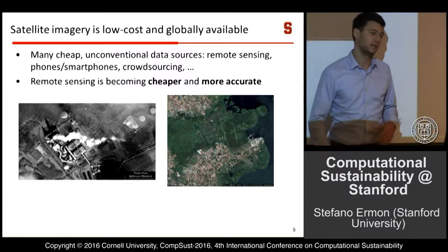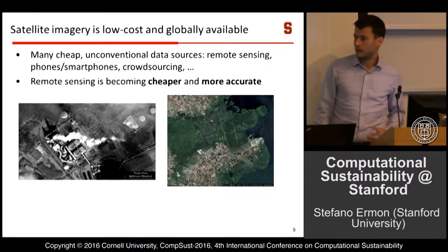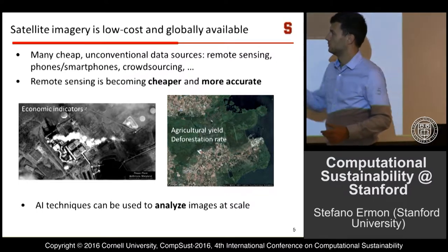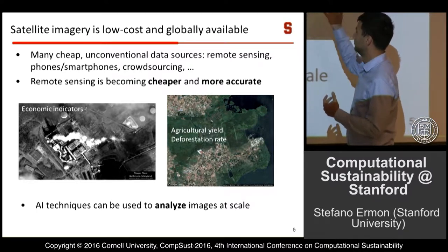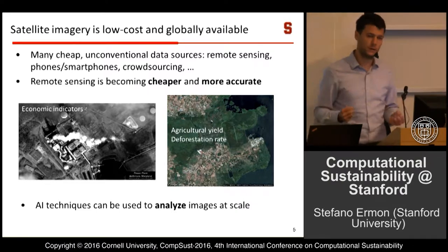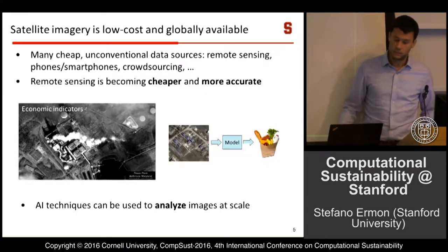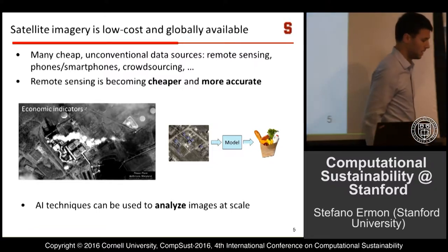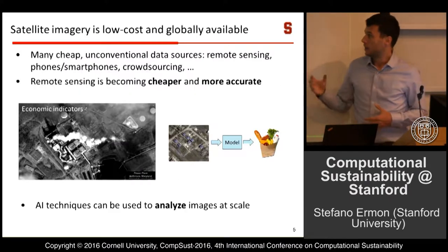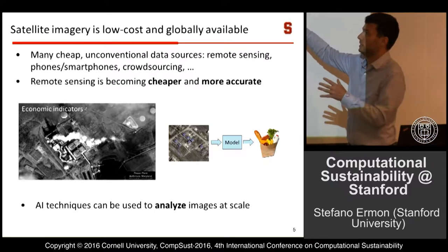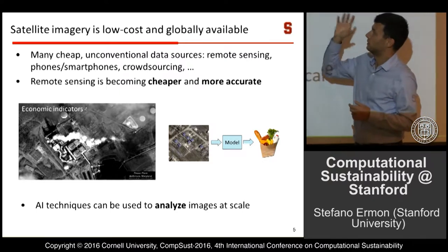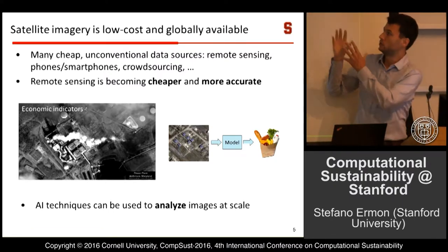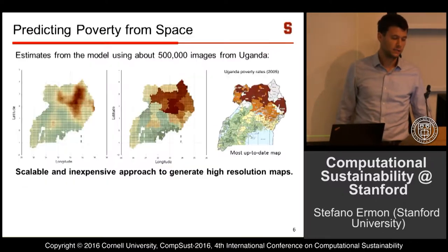These days you can get high-resolution video from satellites commercially available from a startup in the Bay Area recently acquired by Google. We're getting incredibly interesting data with a lot of information about things we care about — you can infer things about economic activities, agricultural deforestation, and land cover changes. We can use AI techniques to infer this information automatically from the images. We developed a model that takes high-resolution images as input and estimates poverty rates for households in that area.